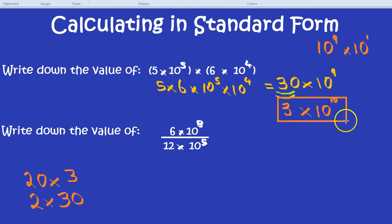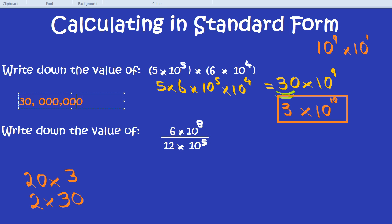If you're interested to know the actual value of this number, well, it's 3 with 10 zeros. 3 with 10 zeros. That's 7 so far, and 10. That would be 30 billion.